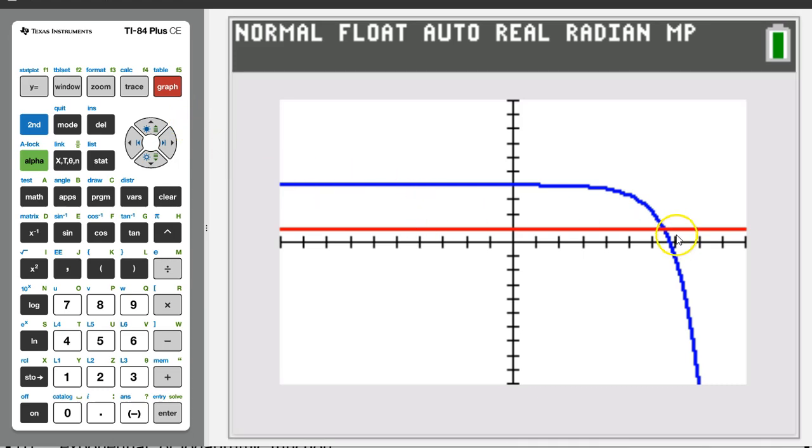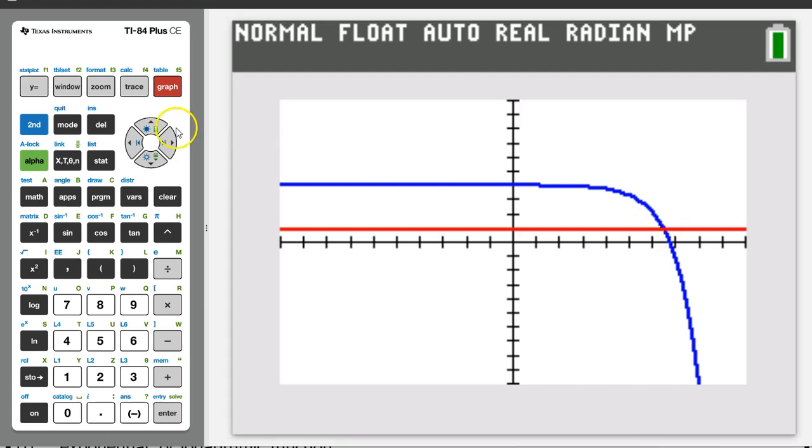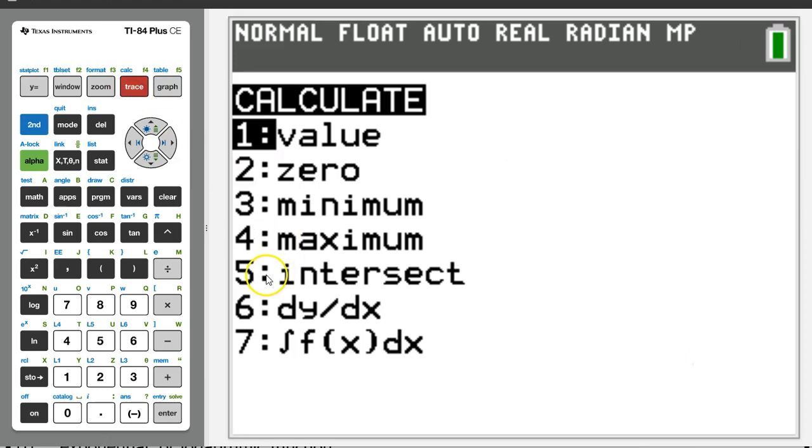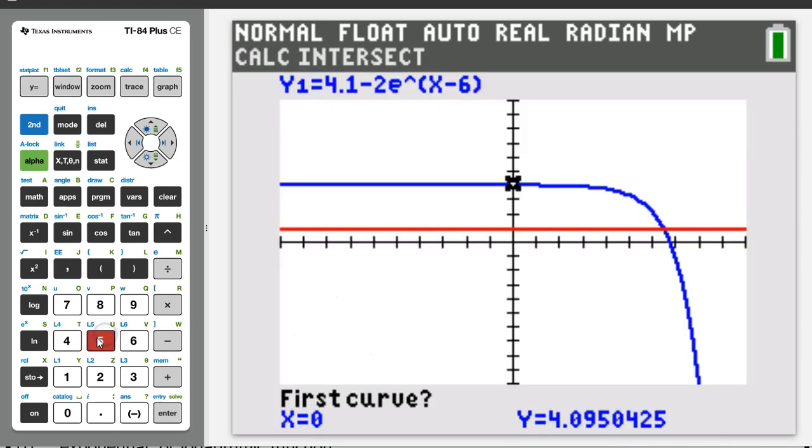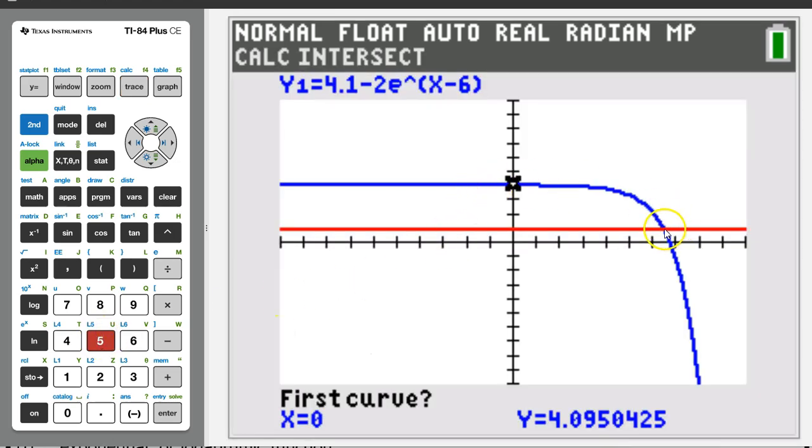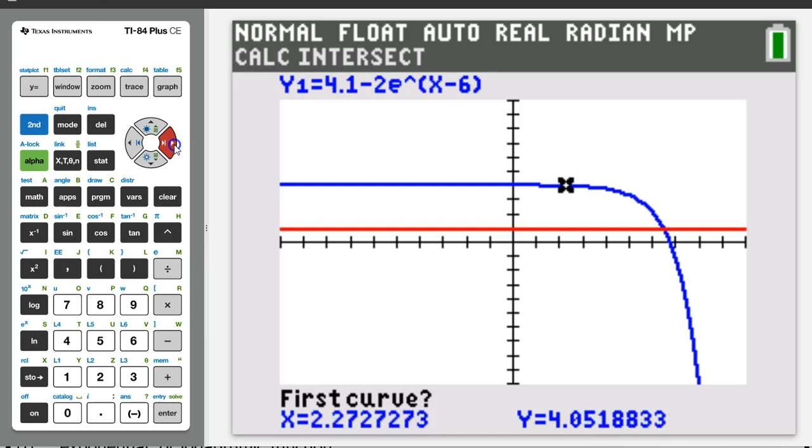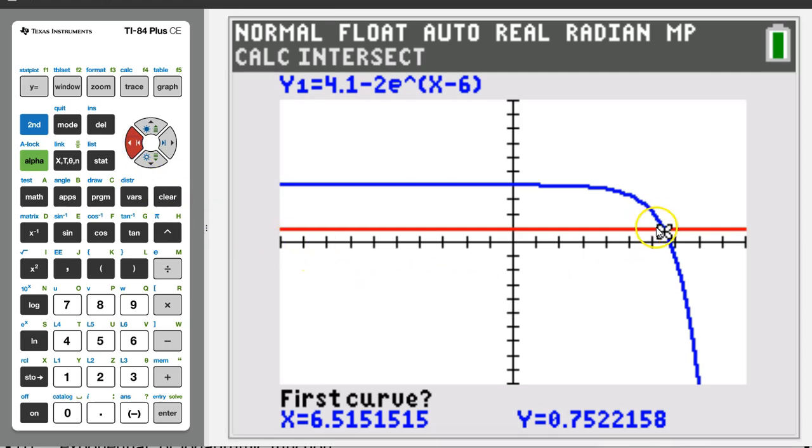So I hit graph and I see this. And this is the intersection point we are looking for. We can find this value by doing second trace and choosing option 5 for intersect. You can just hit the button number 5. Move the pointer close to the point of intersection, like so, overshoot, go back, and then hit enter three times.